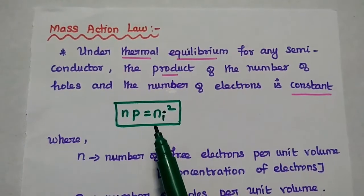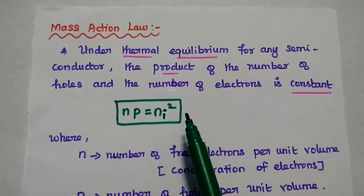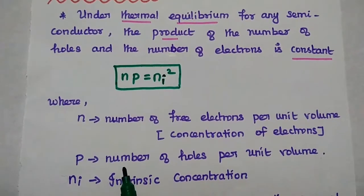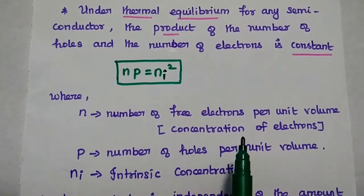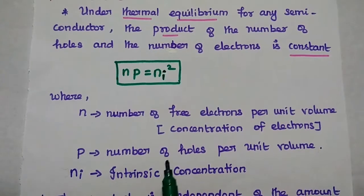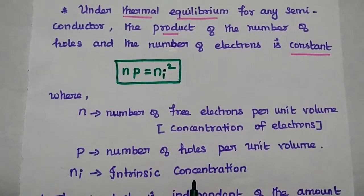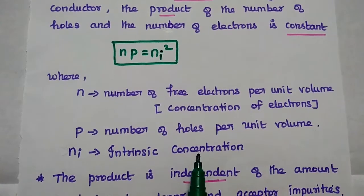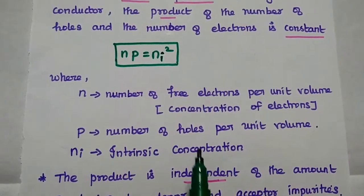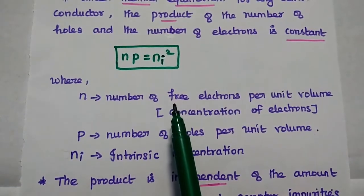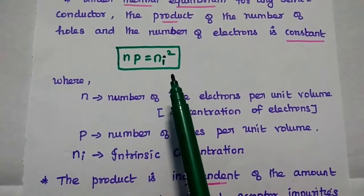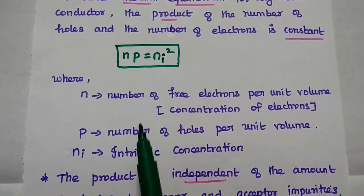It is represented as n into p is equal to ni squared, where n represents the number of free electrons per unit volume, that is concentration of electrons. p represents the number of holes per unit volume, that is the concentration of holes. ni represents intrinsic concentration. Under thermal equilibrium condition, the product of the number of holes and the number of electrons is always constant, that is ni squared.